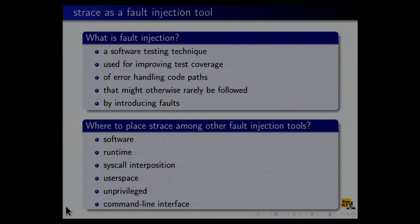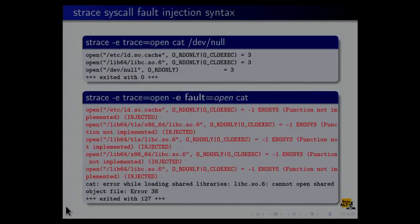Now I'll show you a series of examples that will hopefully give you an idea of what the syscall fault injection syntax is and what you could do with it. I'll start with a simple program, cat from coreutils, which is linked dynamically with glibc. In the top box you see traditional output, and in the bottom box something with fault injection.